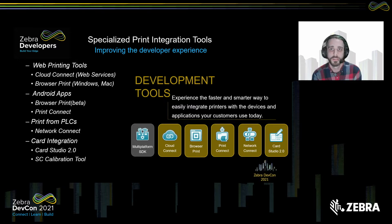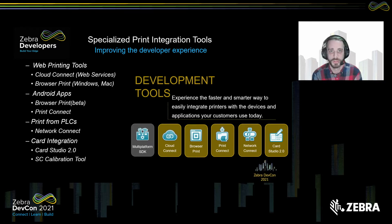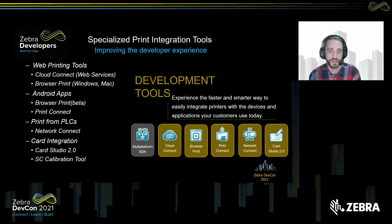For our integrated print integration tools, we're going to look at some web printing tools including Cloud Connect and Browser Print. We'll then move into the Android apps to show you Browser Print on Android and Print Connect. From there, we'll cover enterprise solutions including Network Connect to print from PLCs, and finally some new card integration tools such as Card Studio 2.0 and our smart card calibration tool.